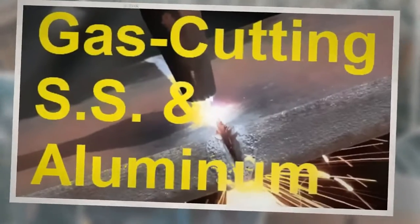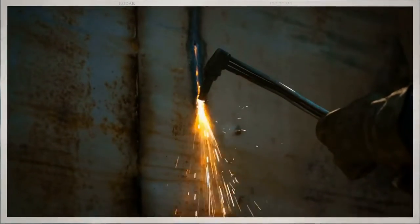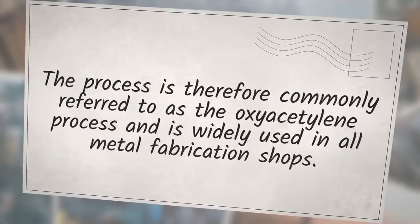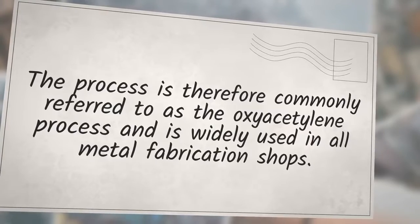Oxygen cutting is based on the chemical reaction between oxygen and the metal at high temperatures. The necessary high temperature is obtained from an oxyfuel gas flame, the most popular fuel gas being acetylene. The process is therefore commonly referred to as the oxyacetylene process and is widely used in all metal fabrication shops.